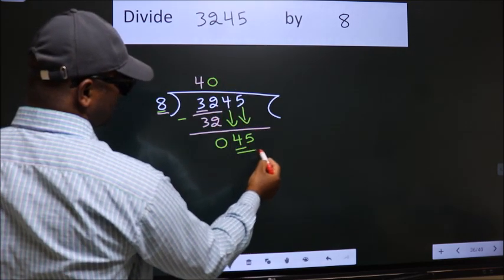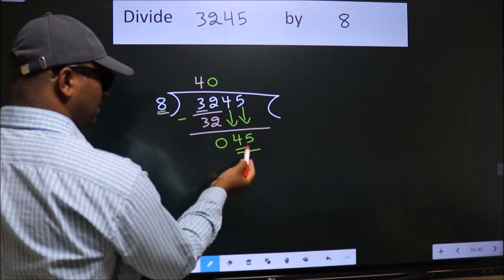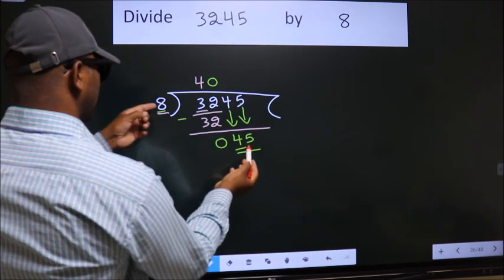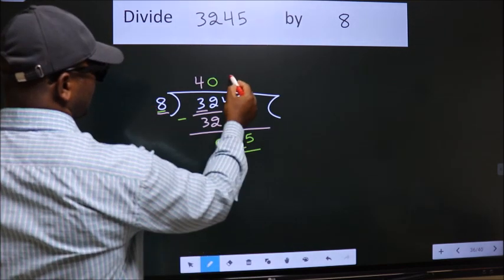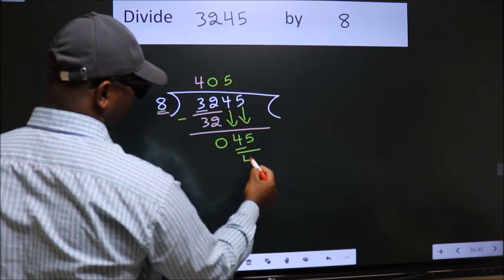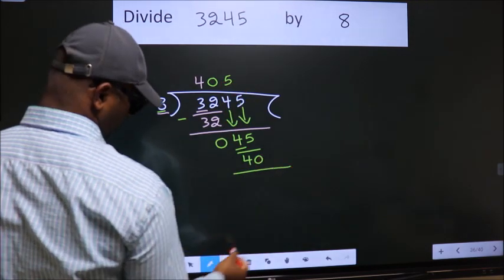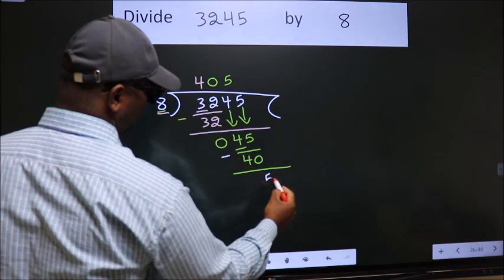So 45. A number close to 45 in the 8 table is 8 fives, 40. Now we subtract. We get 5.